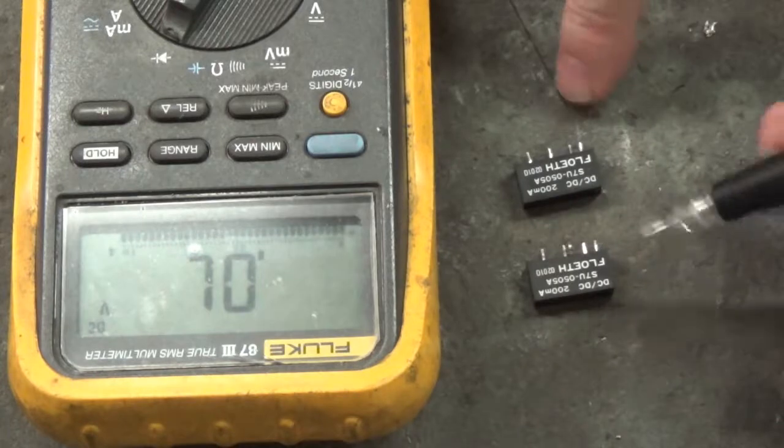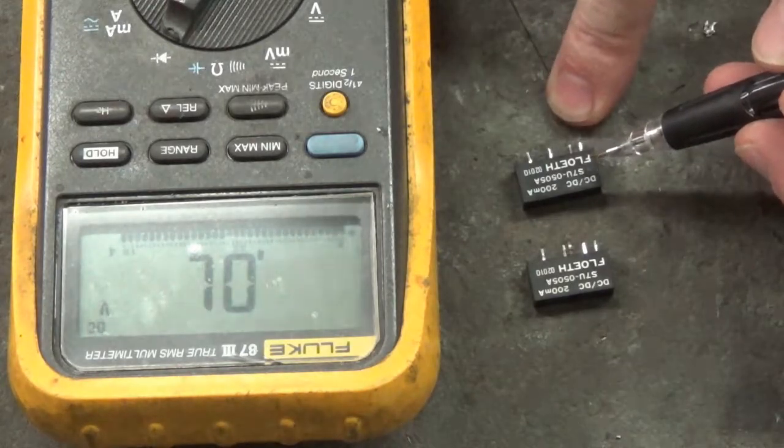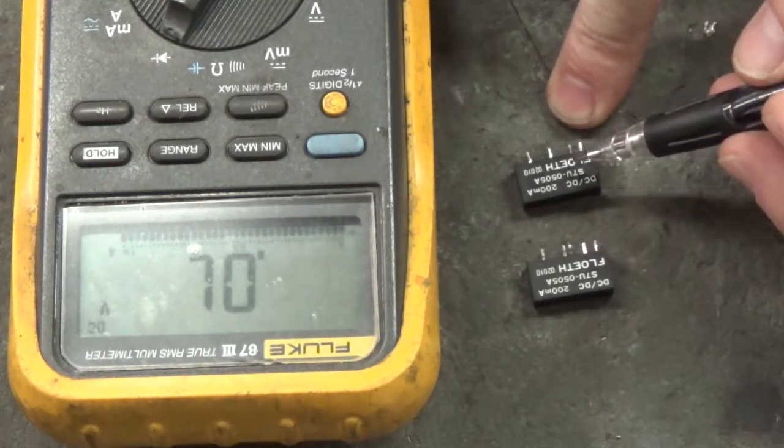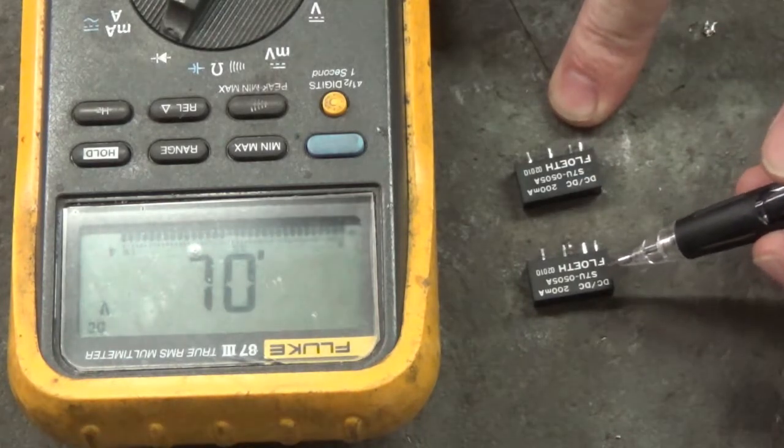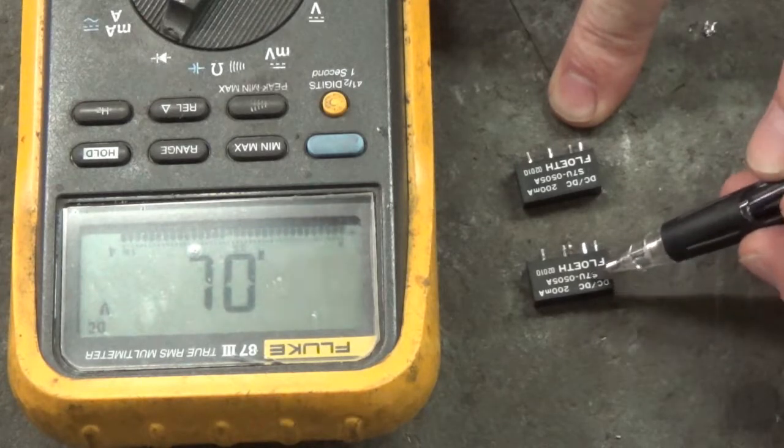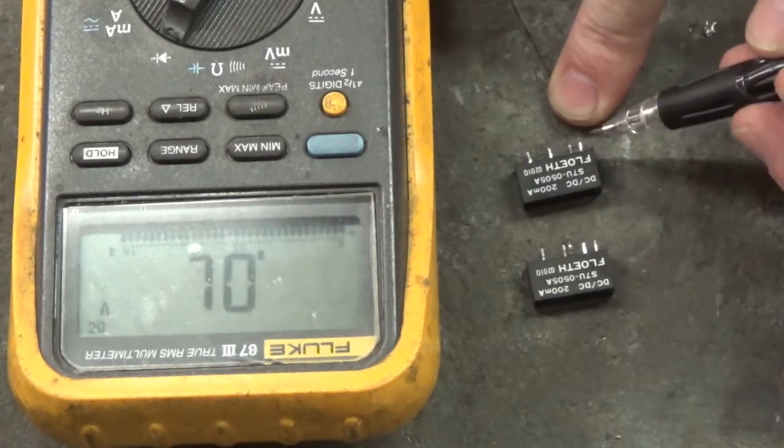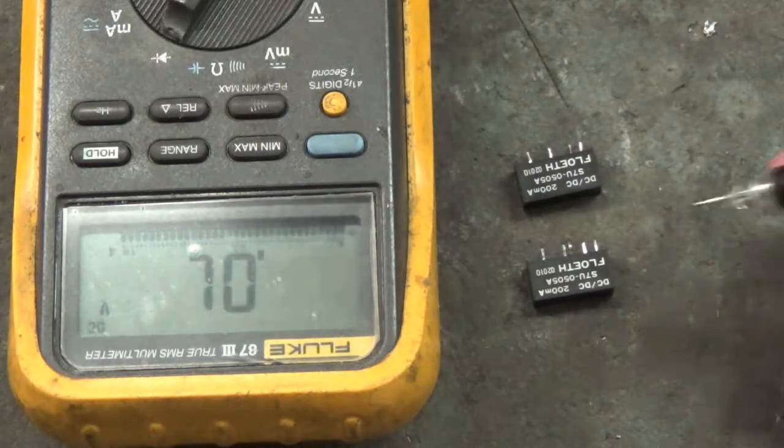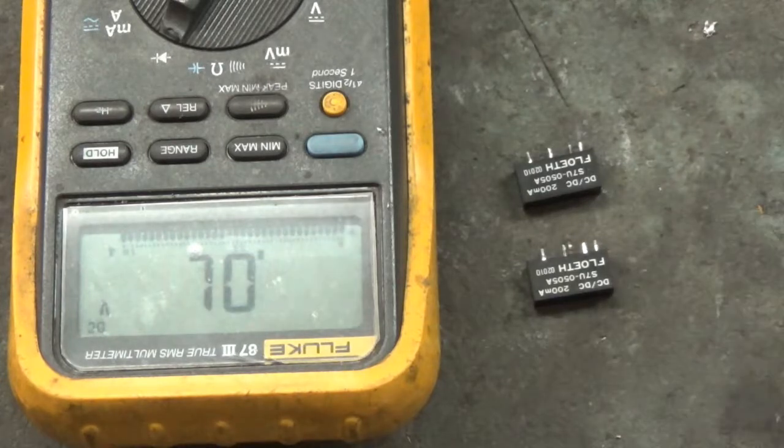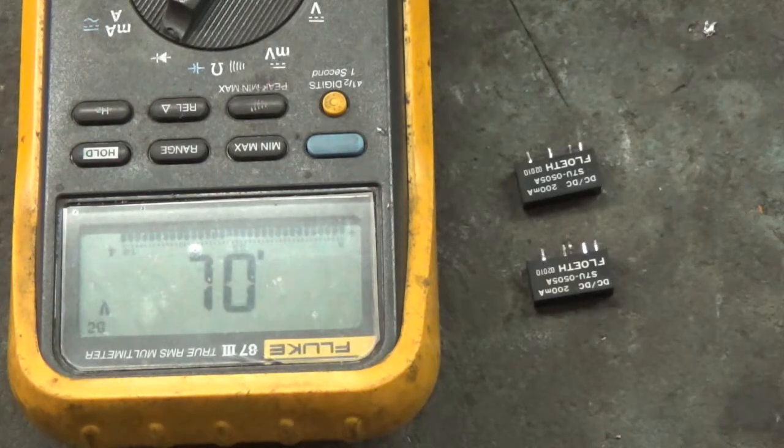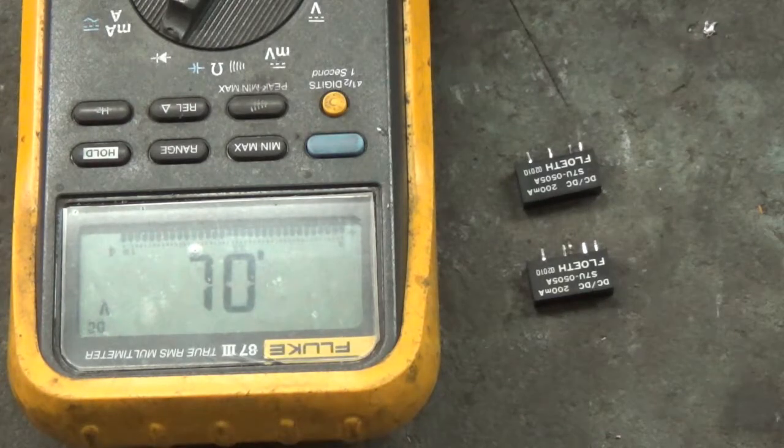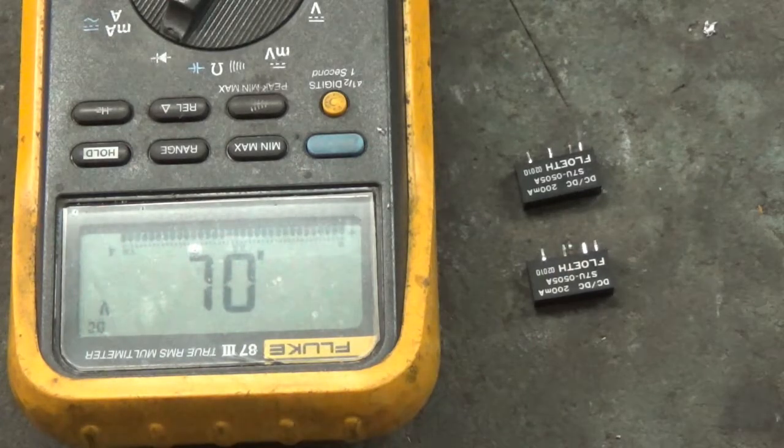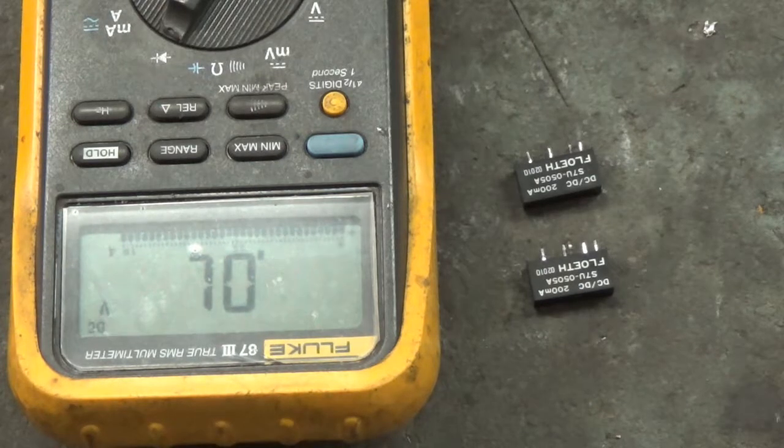I replaced them as a set. Even though this one right here is good, this one died. If I had replaced only one, next week or two weeks or three weeks or a year down the road, this one would have died also, probably in the same manner as this one. That's why I replaced both as a set. After I replaced both these DC to DC converters, I powered up that Siemens profibus DP/DP coupler and it powered up good. I had a good 24 volt green LED turned on.